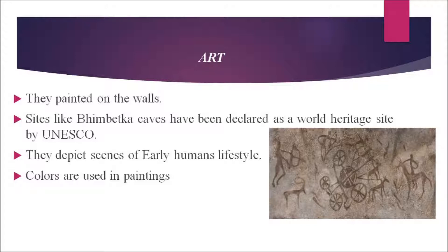Early humans painted on the walls of caves. Such paintings have been found inside caves at Bhimbetka in Madhya Pradesh, which has been declared a World Heritage Site by UNESCO. These paintings tell us about early humans' lifestyle — they depict scenes of hunting, people dancing, playing round drums, wounded animals, and people riding animals like elephants and bison. In one painting, a man is shown riding a horse. The colors used are mainly white and red, with some green and yellow. Scientists believe these colors were prepared by combining charcoal, red stone, and powders from other stones. The paintings have survived for many years and the colors have not faded.